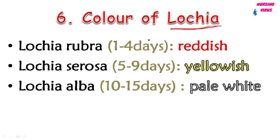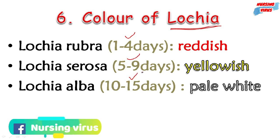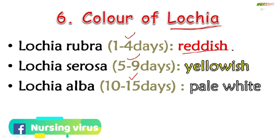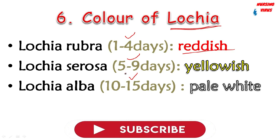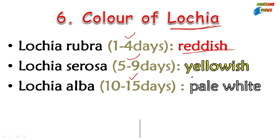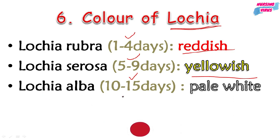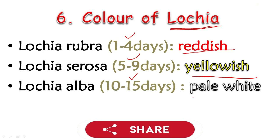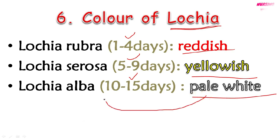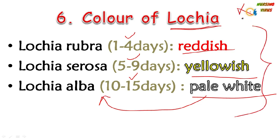The next topic is the color of lochia, a condition seen after childbirth where the color differs on different days. Lochia rubra occurs between days one to four after childbirth and appears reddish. Lochia serosa occurs between days five to nine and appears yellowish. Lochia alba occurs from days 10 to 15 and appears pale white. This is also highly important in examinations.